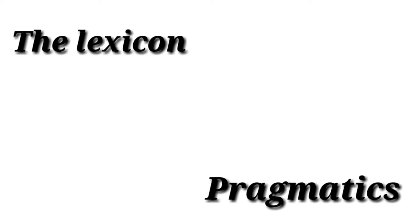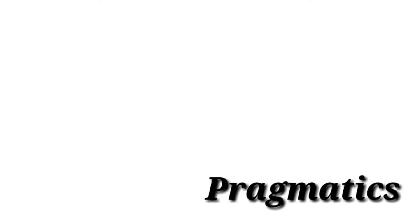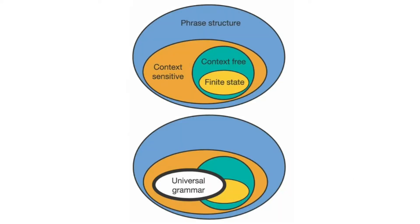It places grammar at the heart of language development, with things like the lexicon and pragmatics subservient to grammar. If you know the rules of grammar — an exponent of what is called generative grammar — you can construct an almost limitless array of language.